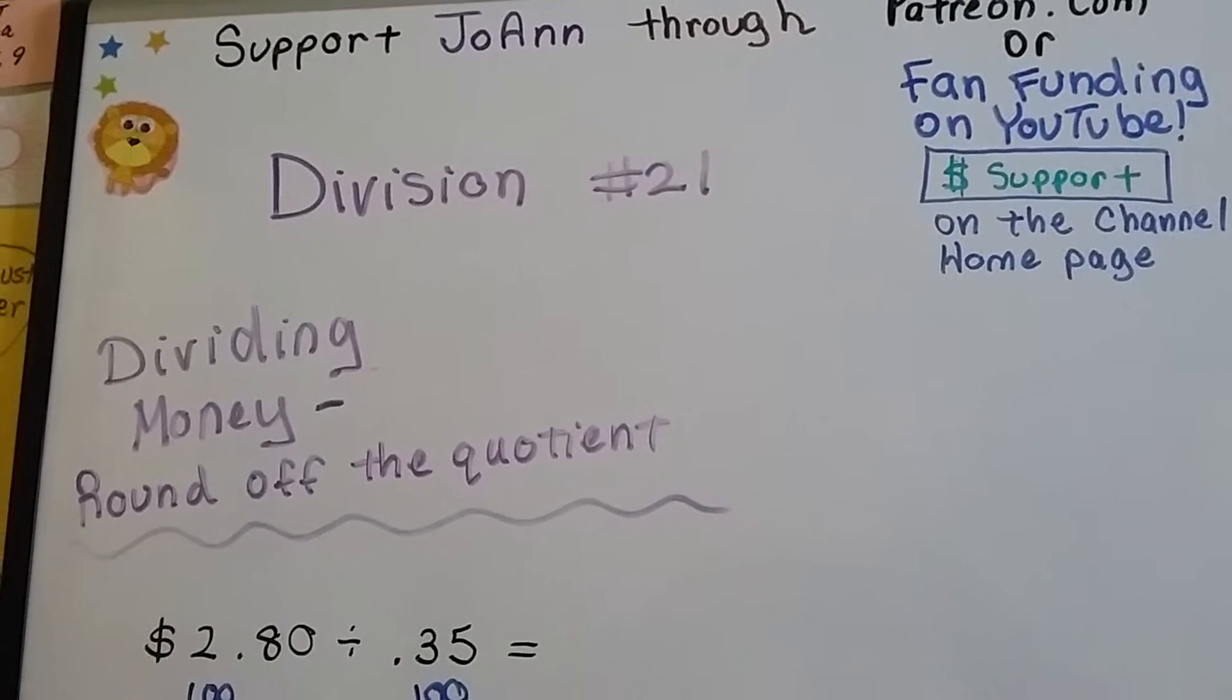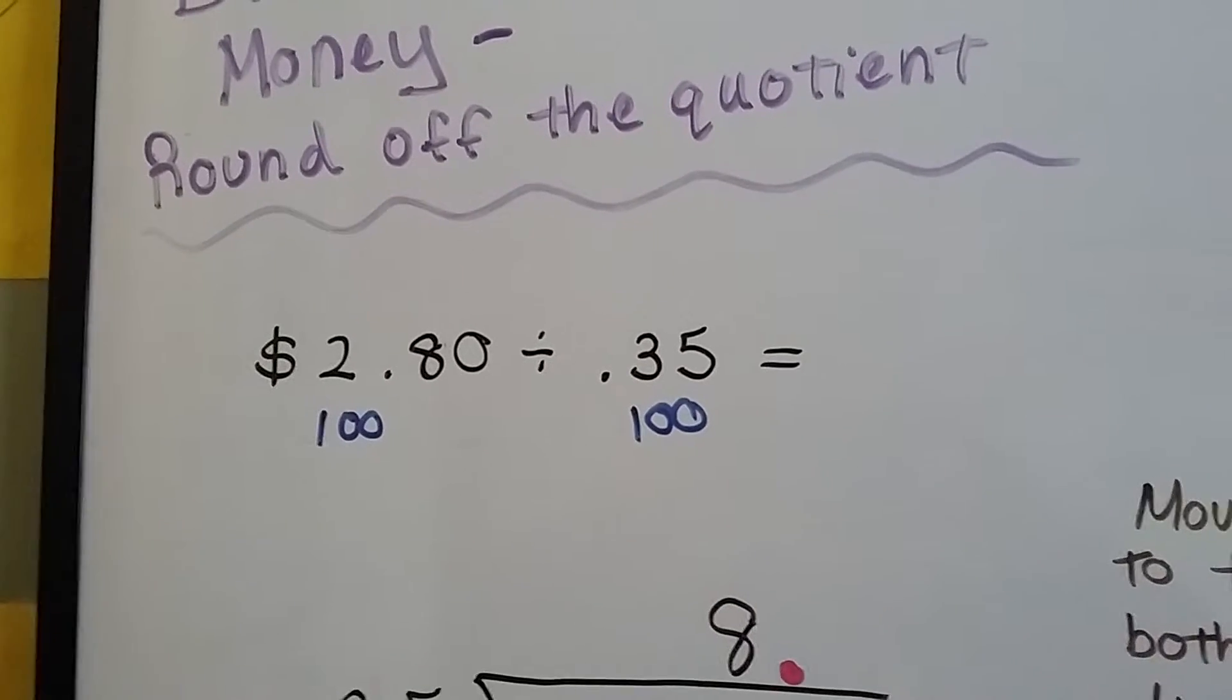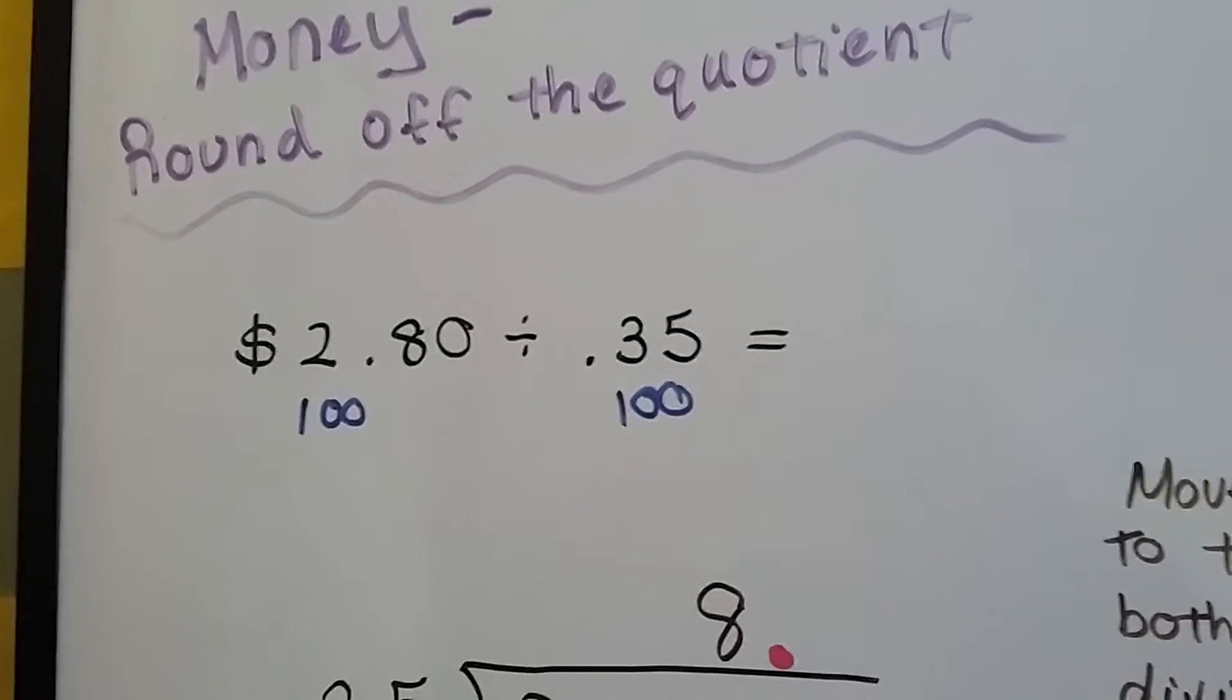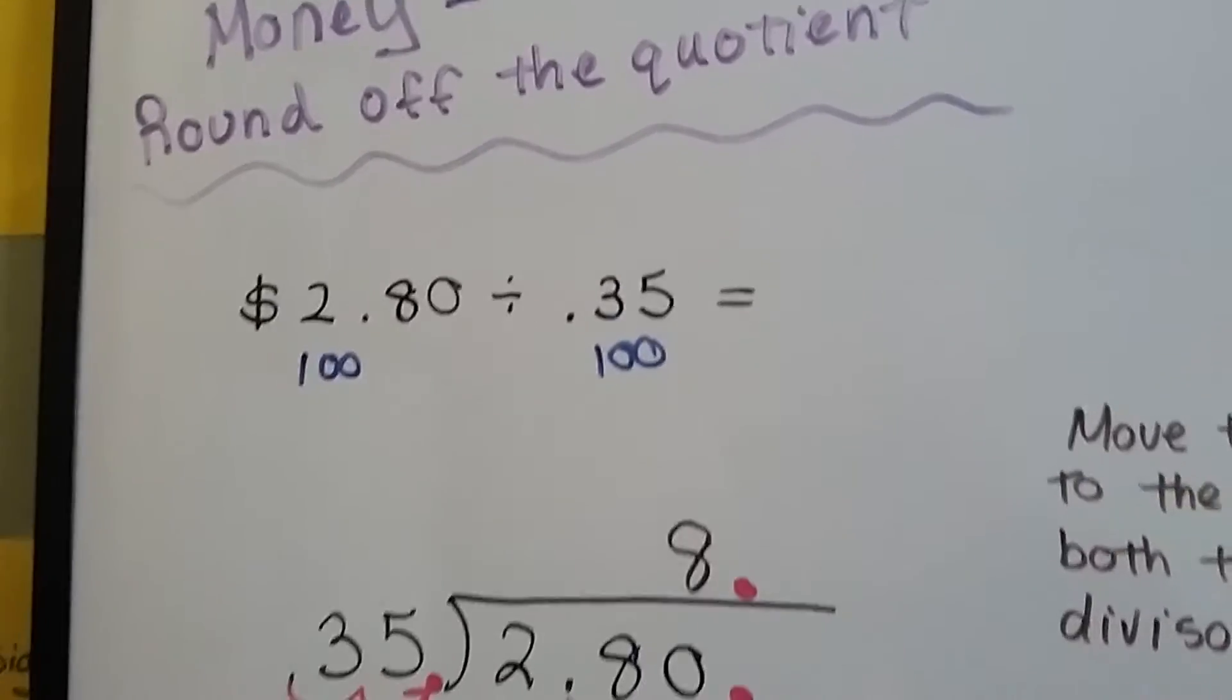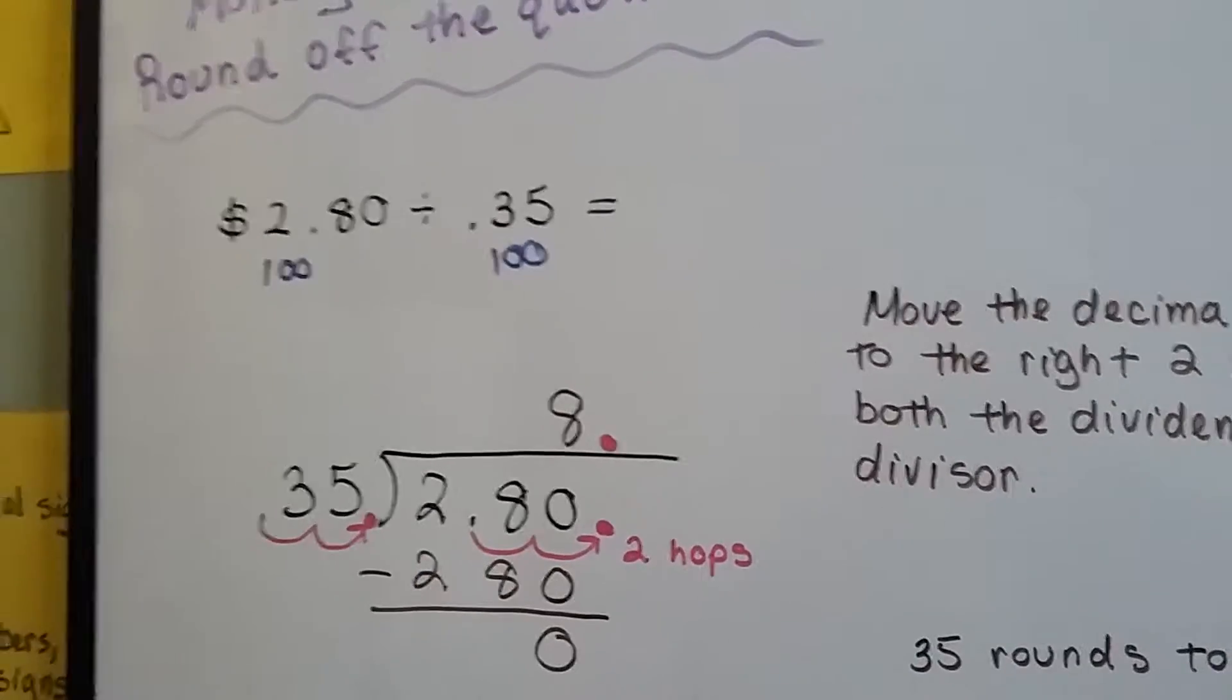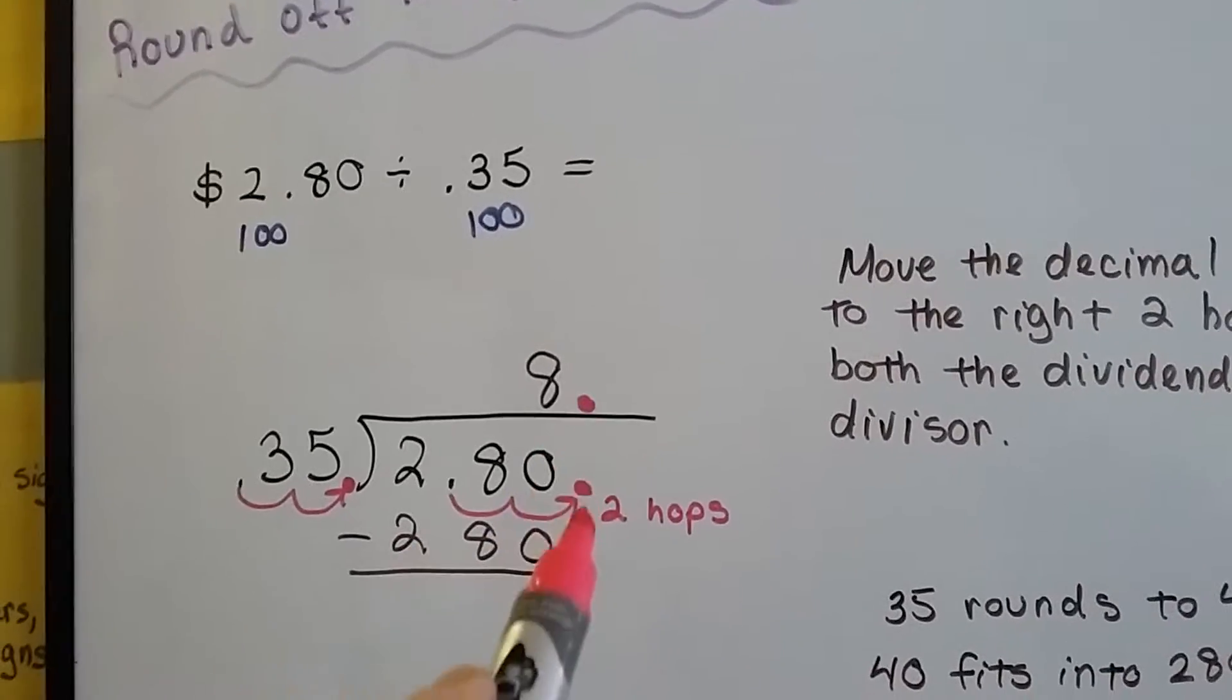Long division dividing money, round off the quotient. When we have an amount like $2.80 and we need to divide it by 35 cents, what we can do is multiply each of these by 100. And what that's going to do is it's going to move the decimal place two points back. It'll move back two hops for both the divisor and the dividend.